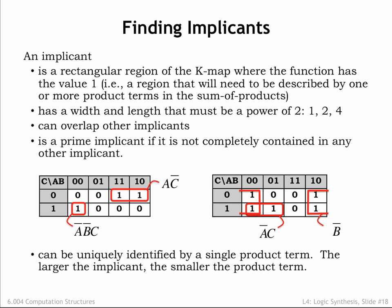That makes sense. As we move around inside a large implicant, the number of inputs that remain constant across the entire implicant is smaller. Now we see why we want to find the largest possible prime implicants. They give us the smallest product terms.